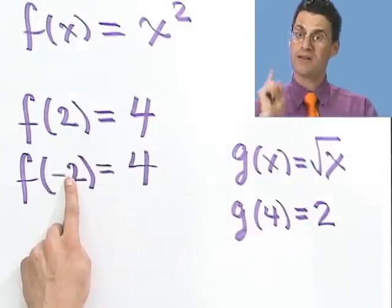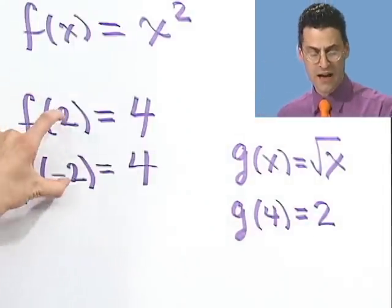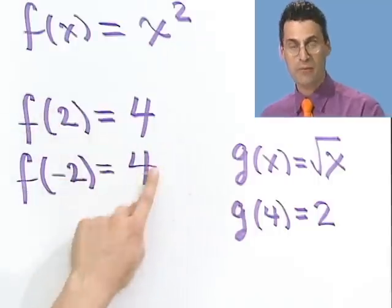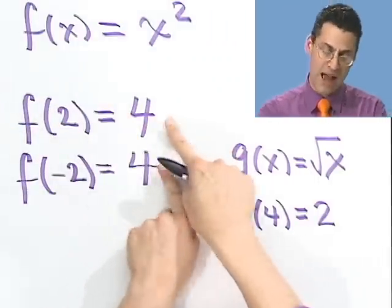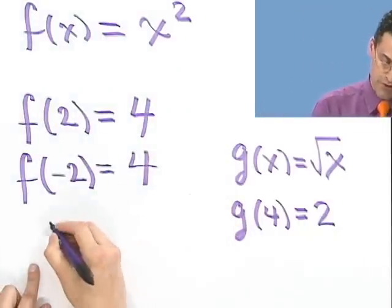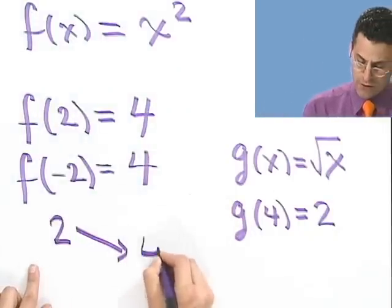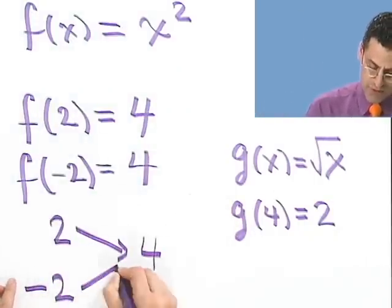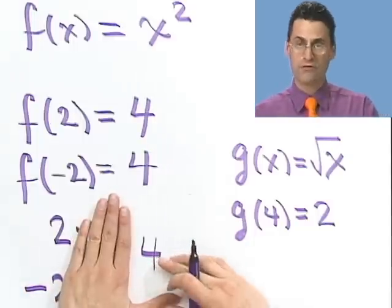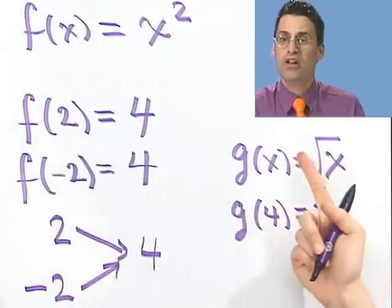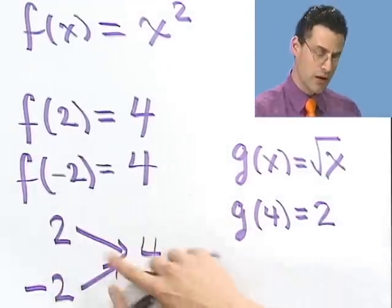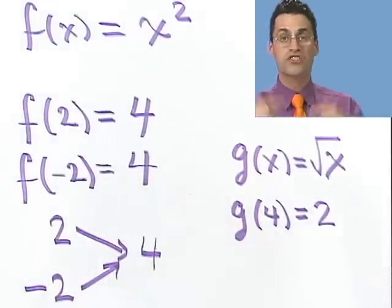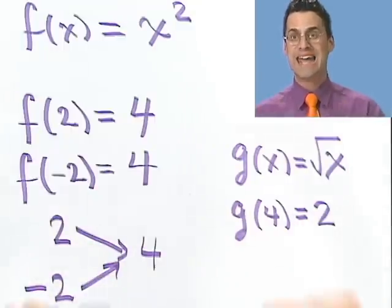And the problem is because there are different values of x's here that lead to the same y value. So once I get the same y value, I can't go backwards. Because if I start with a 2, that leads me to 4. But if I start with a negative 2, that leads me to 4. But if I start with 4, how can I go backwards? I don't know where to go. Do I go to 2? Do I go to negative 2? Both roads get back to 4. So which one did you have in your mind? I can't tell.